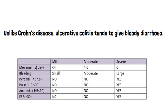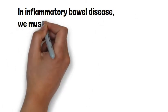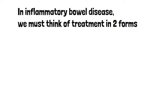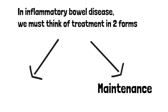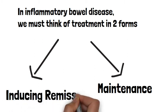Looking in depth at the score, severe features include more than six bowel motions in 24 hours, large amounts of bleeding, pyrexia, a pulse greater than 90, anaemia, and an ESR greater than 30. Normally patients with a severe exacerbation will have greater than six bowel movements and one or more of the other features. In inflammatory bowel disease we must think of treatment in two forms: remission and maintenance. Because it's a relapsing remitting condition, patients will have flares, and in this case we want to induce remission rather than use maintenance drug therapy.